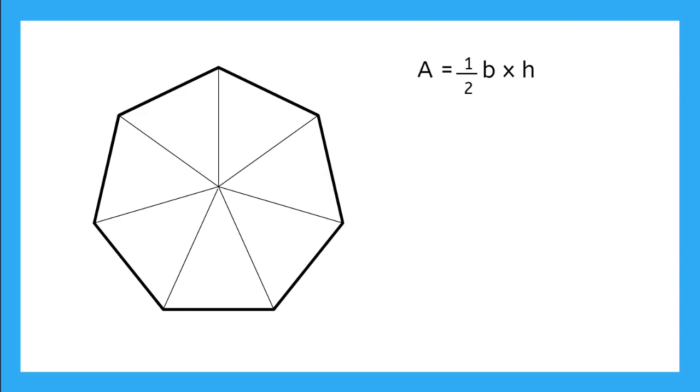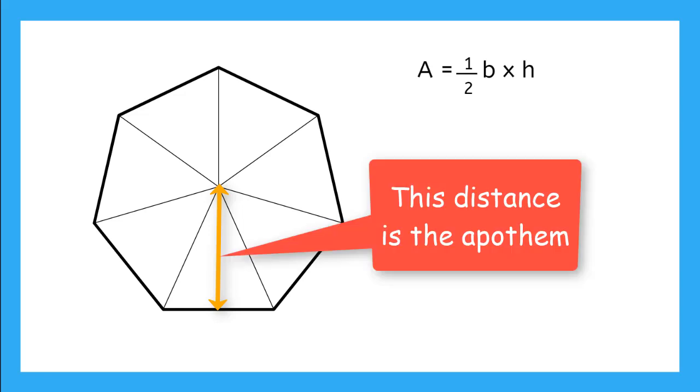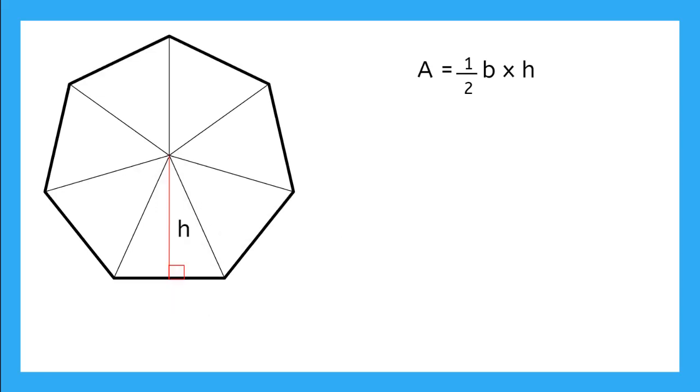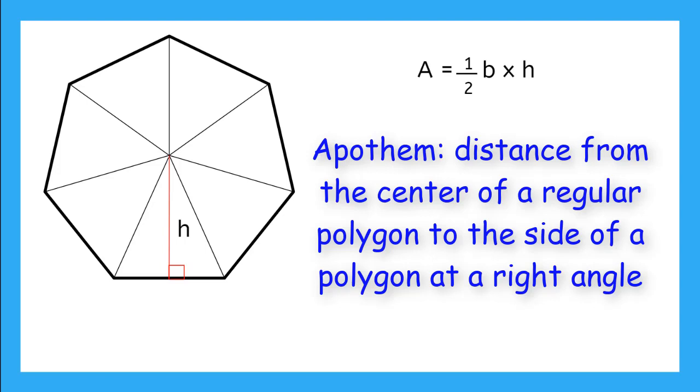Yeah, we need to find the distance from the base to the opposite vertex with a right angle. We call this distance the apothem. The distance from the center of a regular polygon to the side at a right angle represents the height of the triangles. We also call the height of the triangles the apothem.